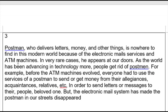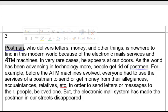The third body paragraph: 'Postman, who delivers letters, money and other things, is nowhere to find in this modern world because of the electronic mail services and ATM machines. In various cases, he appears at our doors. As the world has been advancing in technology more, people get rid of postman. For example, before the ATM machines evolved, everyone had to use the services of a postman to send or get money from their acquaintances, relatives, etc. In order to send letters or messages to their beloved ones. But the electronic mail system has made the postman in our streets disappear.' This person focuses on one job and explains why it's being threatened.